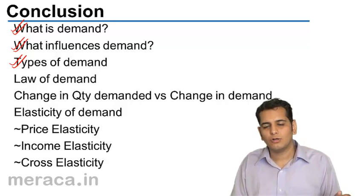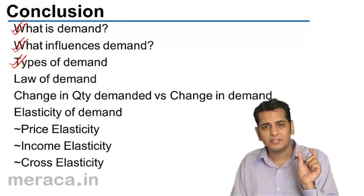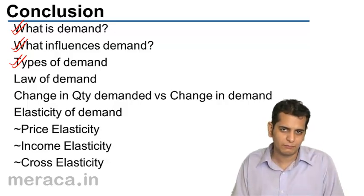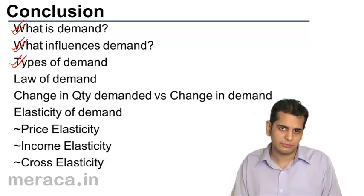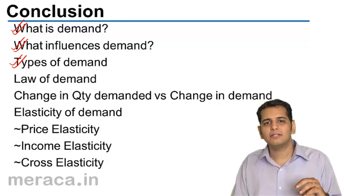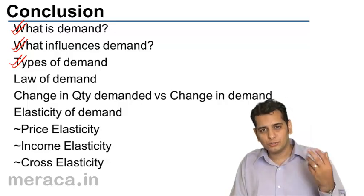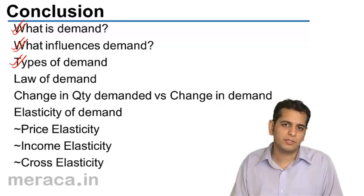Then we did short-run demand and long-run demand. Short-run demand is the demand considered during a phase where the factors of production are fixed except for one — only one factor is variable — so during that period people take time to adjust. Long-run demand is demand during the period where all the factors of production are variable, so producers and consumers can adjust to the changes taking place in the market.